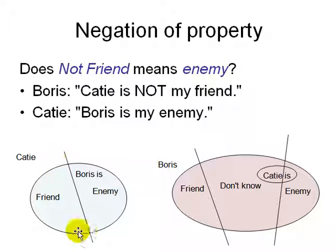So for Katie, the world is divided into two parts: friends and not friends, where not friends are enemies. And for Boris, it's divided into three parts: people who are friends, people who are enemies, and people you don't know. So this will be a big part of logical discussion - knowing what we don't know. We'll come to that later on. Thank you.